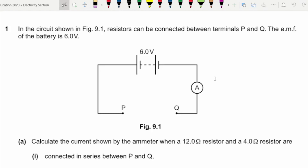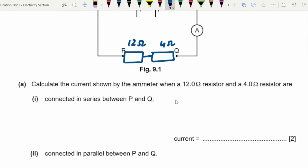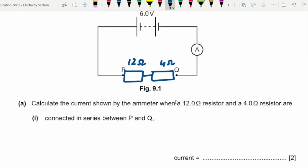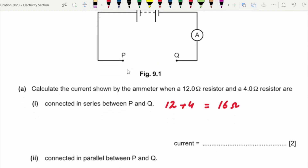In the given circuit there are two resistors: 12 ohms and 4 ohms, connected between terminals P and Q. We need to find the total current in the circuit when these two resistors are connected in series. When connected in series, the total resistance is 12 plus 4, which equals 16 ohms.